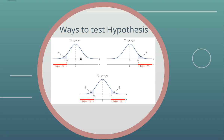You accept or reject the null hypothesis based on the confidence level you set — for example, 90%, 95%, or 99% confidence. Based on that, you get the rejection region. Z-statistic tables, available in textbooks or online, provide upper and lower critical values for a two-tailed test, or a single directional value for a one-tailed test.